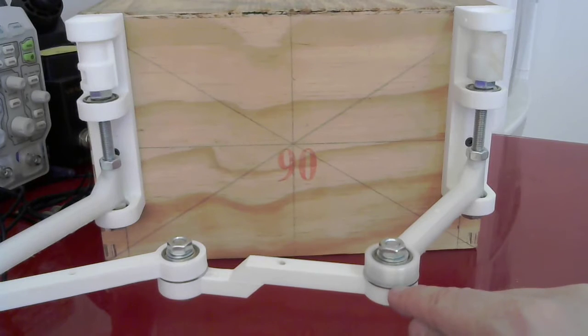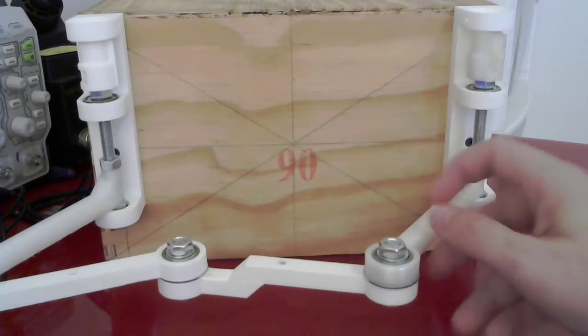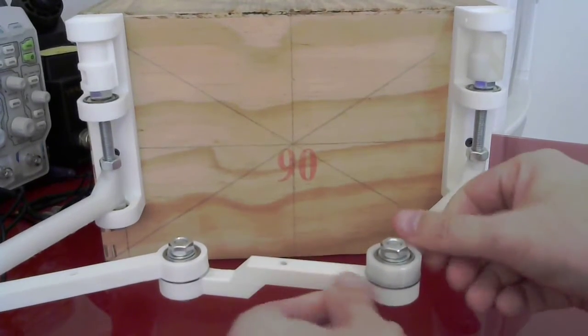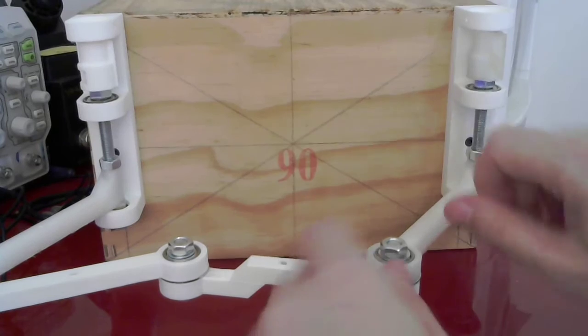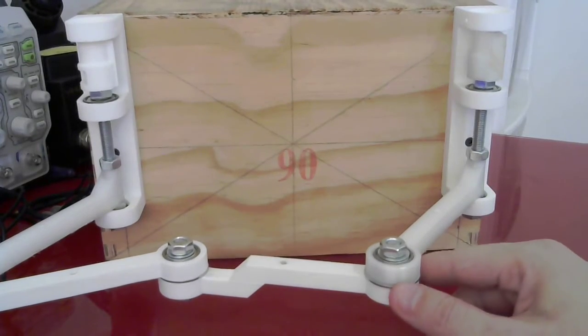Then this in the middle is an M8 30 millimeter washer that I put in there so that this won't have a gap there and this can bend a little bit.